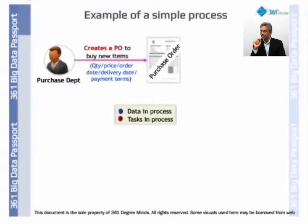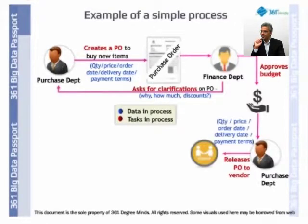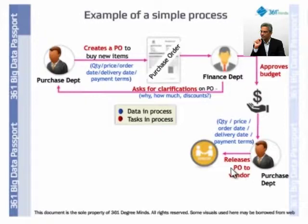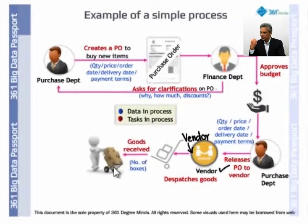It will raise or create a purchase order. The purchase order is then sent to the finance department, which approves the budget. It goes back to the purchase department confirming approval, and then the purchase order is released to the vendor. The vendor collects everything in a package and you receive the goods.